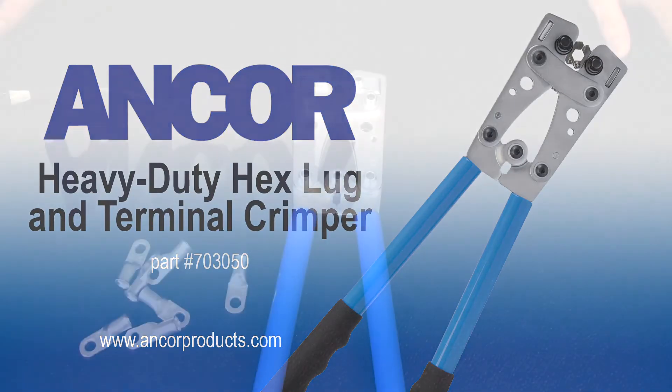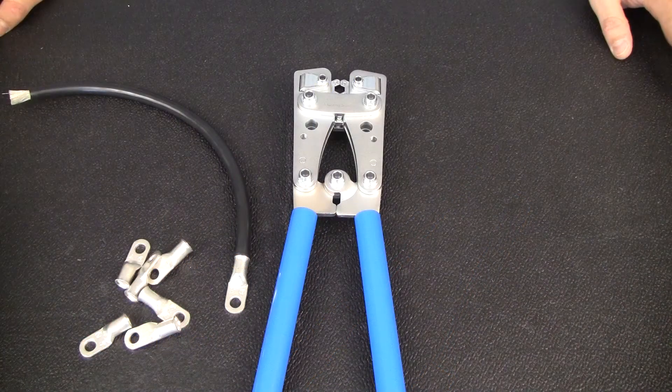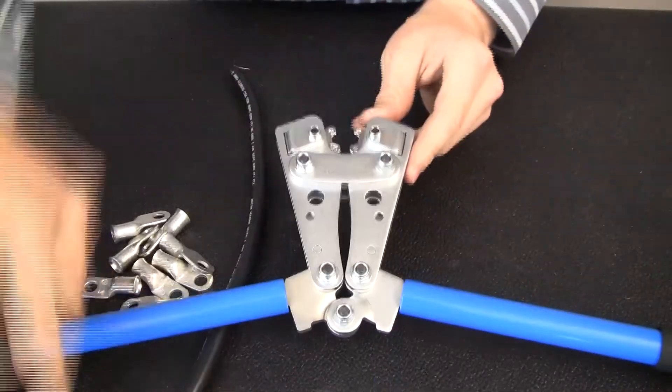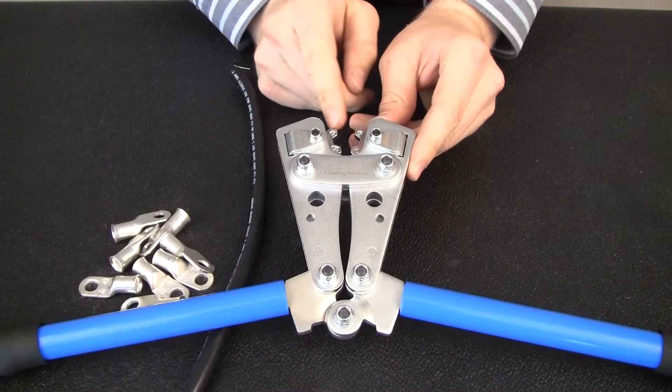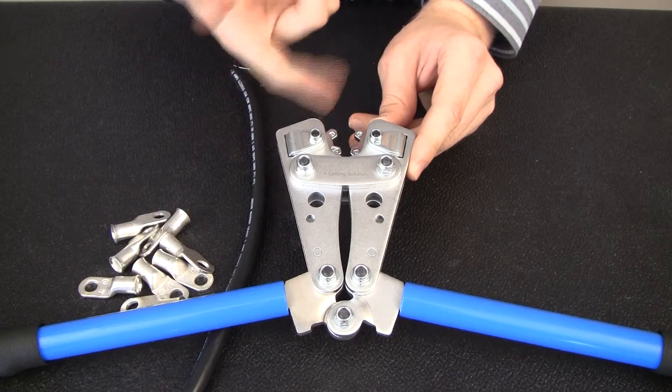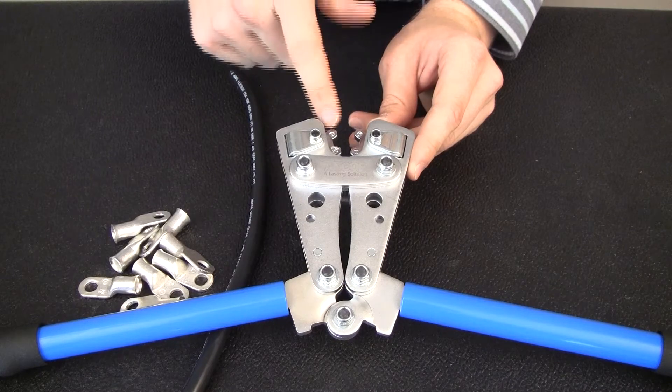Now we're going to show you how to crimp a battery cable using the Ancor hex lug crimper. The great thing about this tool, besides being really compact, is it gives you a hex style crimp. You can see the hex in there is going to give you the optimal electrical conductivity within that crimp.